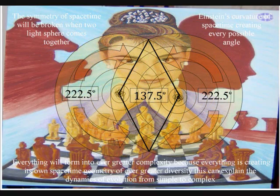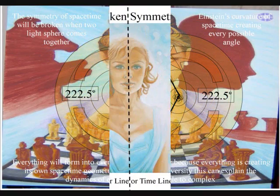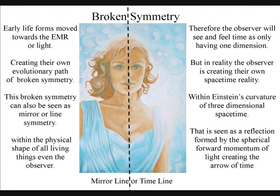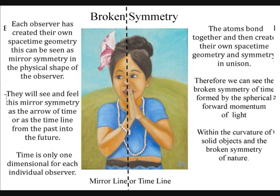This broken symmetry can also be seen in mirror symmetry, within the physical shape of all living things, even the observer. Therefore, the observer will see and feel time as only having one dimension.